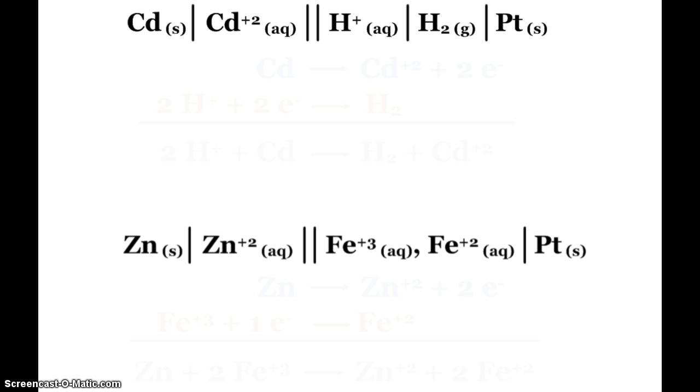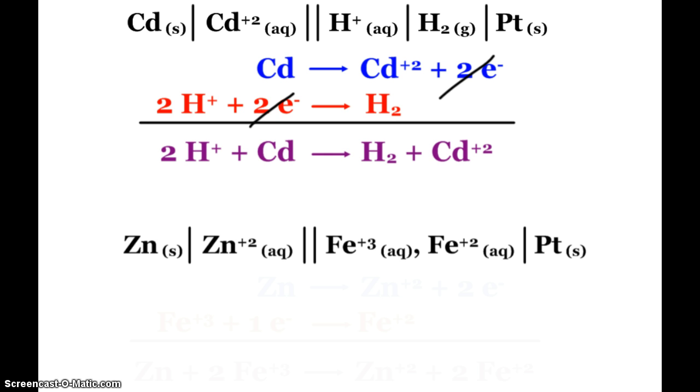So, the nice thing is, again, our cell notations always start with anode on the left. So, the cadmium is losing two electrons, and that is my oxidation half reaction. Hydrogen ions are being reduced to hydrogen gas. Make sure it's balanced, so two hydrogen ions plus two electrons. And then, I can simply cancel my two electrons and add these two reactions together to show the overall reaction of the cell.